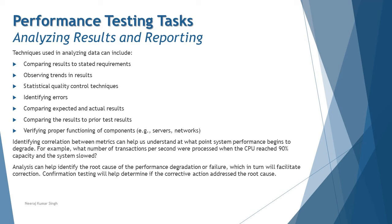Analysis can help identify the root cause of performance degradation or failure, which will then facilitate corrections or recommended actions. Confirmation testing — essentially retesting — will help determine if the corrective action addressed the root cause or not. We also track those action items to make sure everything has been resolved, much like the general testing process. That covers analyzing results as part of this tutorial.